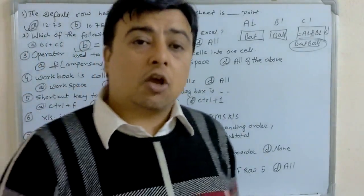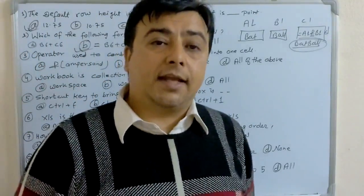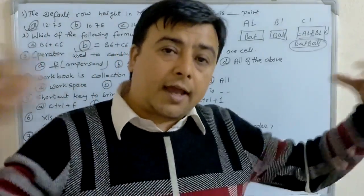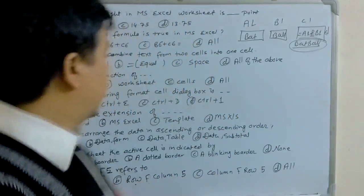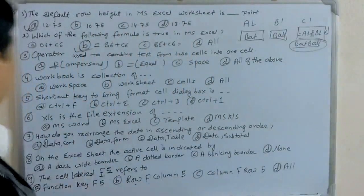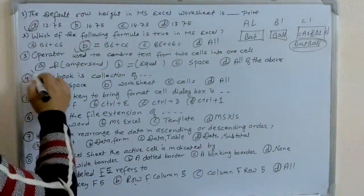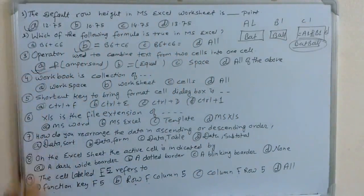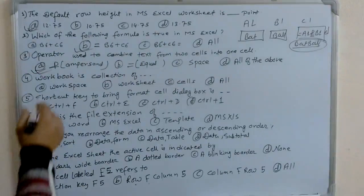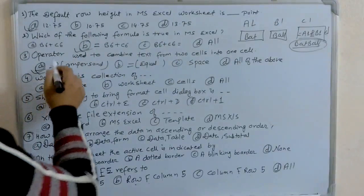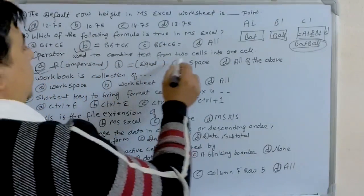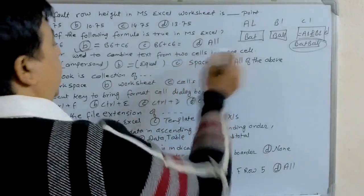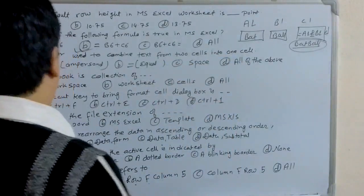Concatenation means joining together. The answer is A — the ampersand (&) operator is used to combine text from two cells into one cell. This is also known as text concatenation.